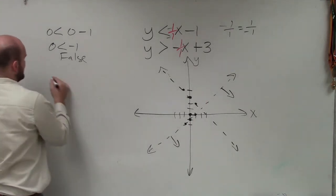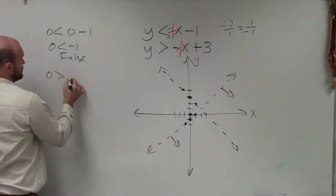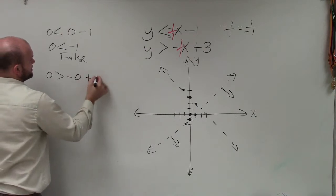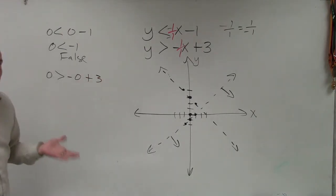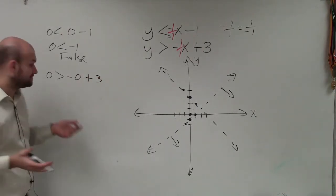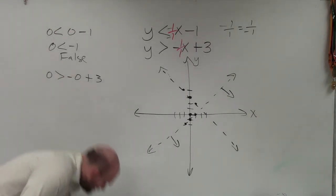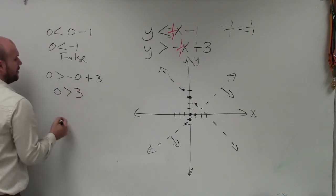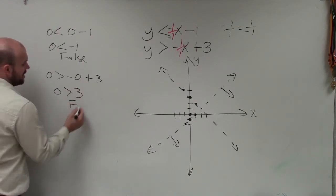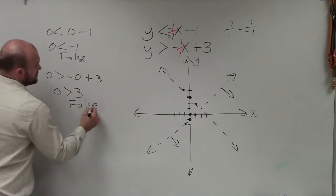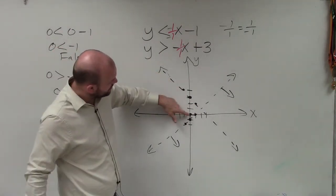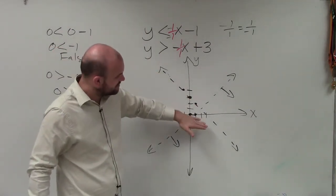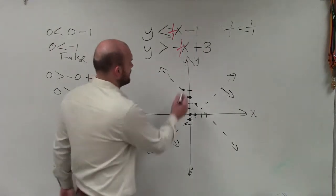Then I'll go ahead and plug my test point in for this equation. So 0 is greater than negative 0 plus 3. Well, there is no such thing as negative 0. 0 is not positive or negative. So therefore, I have 0 is greater than 3. Well, 0 is not greater than 3. That is also false. So therefore, for this inequality, my test point is false. That means all the points below this boundary line are false, and all the points above are true.